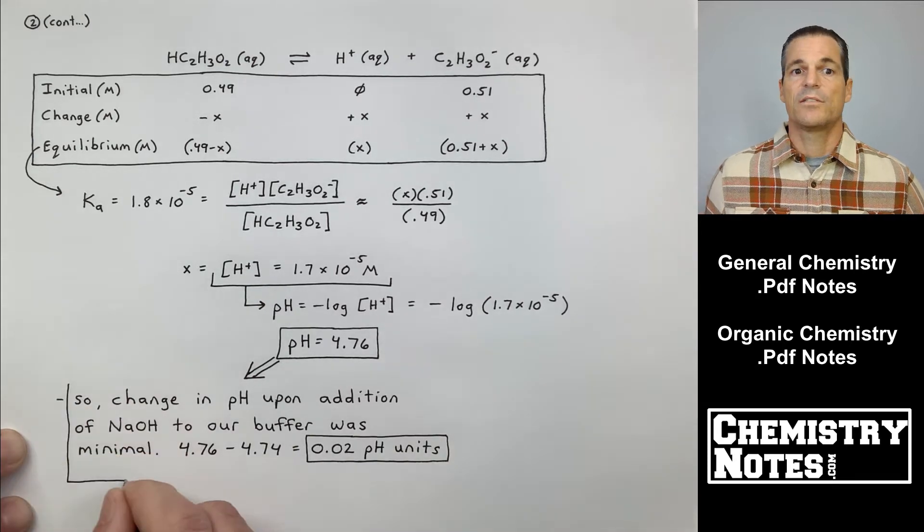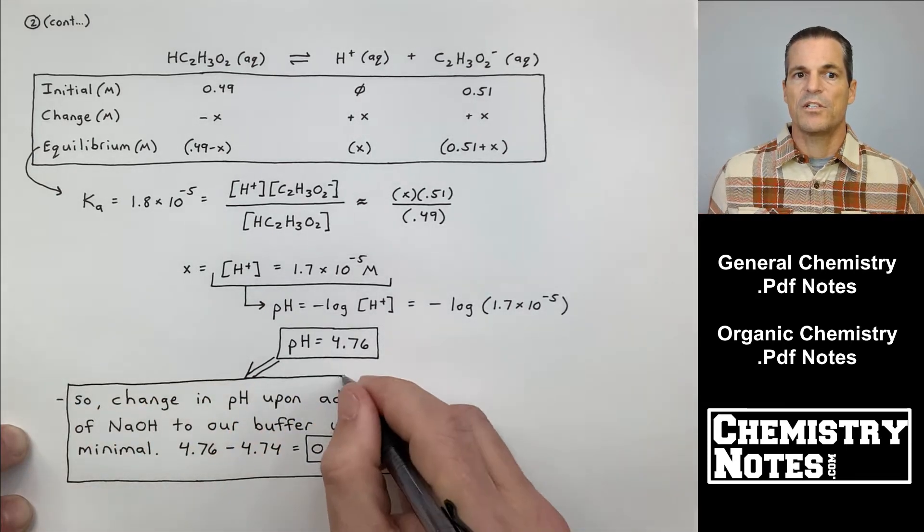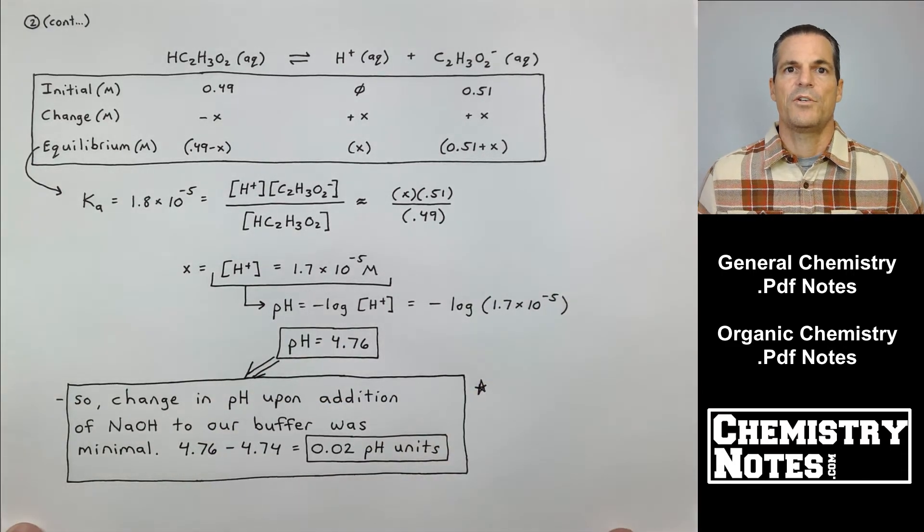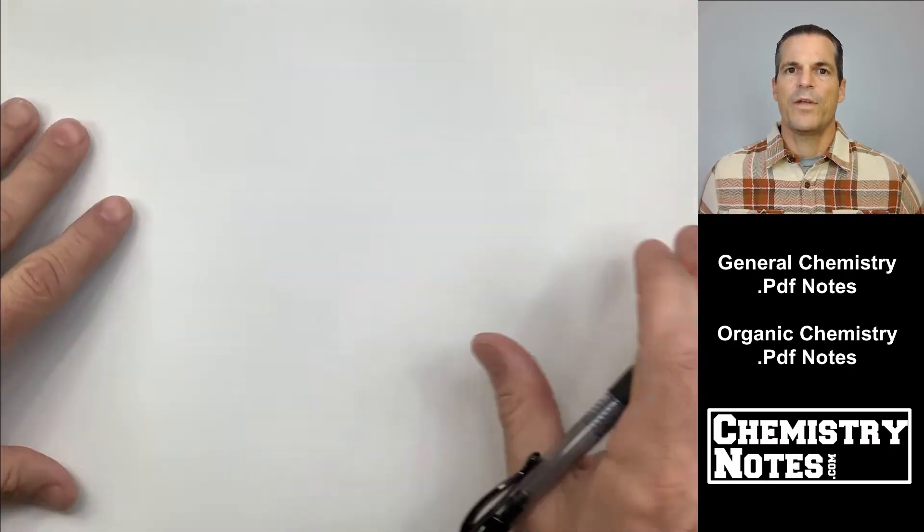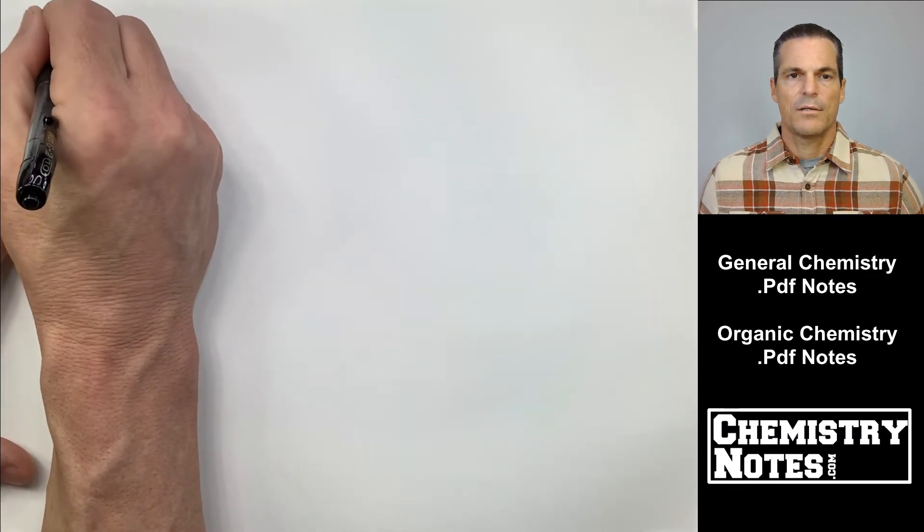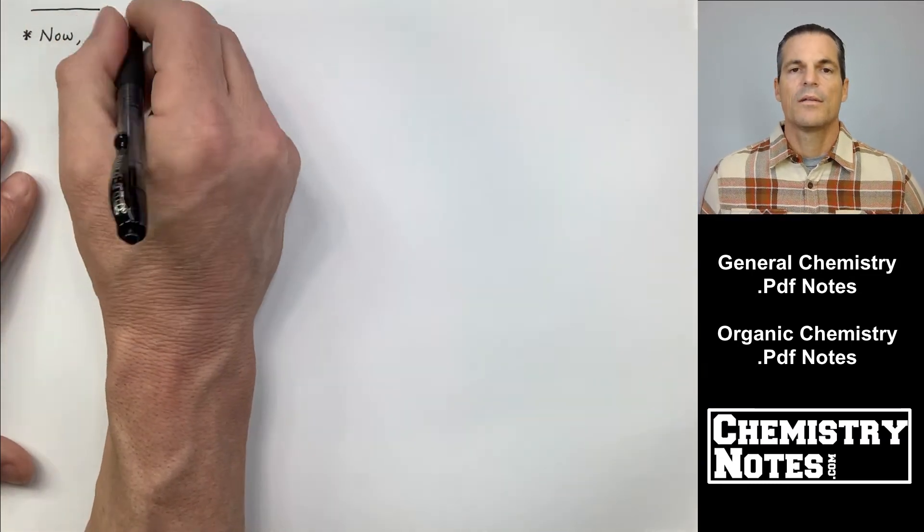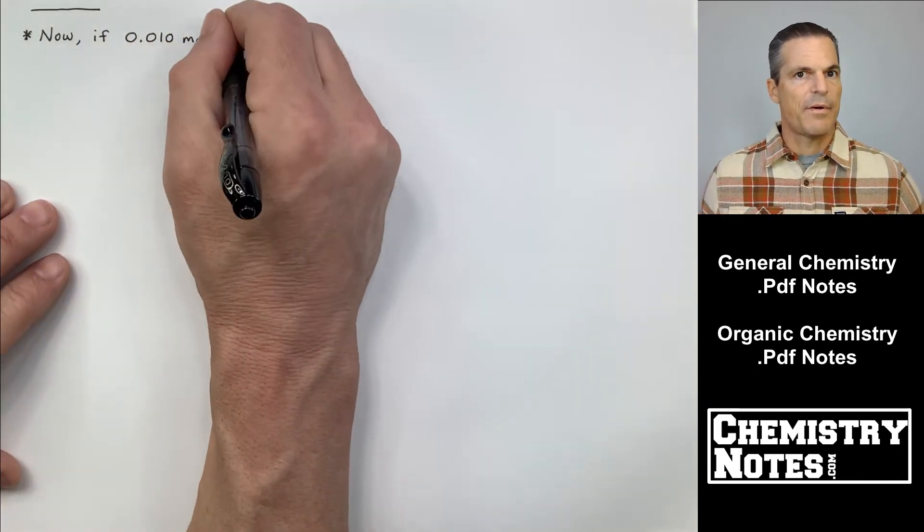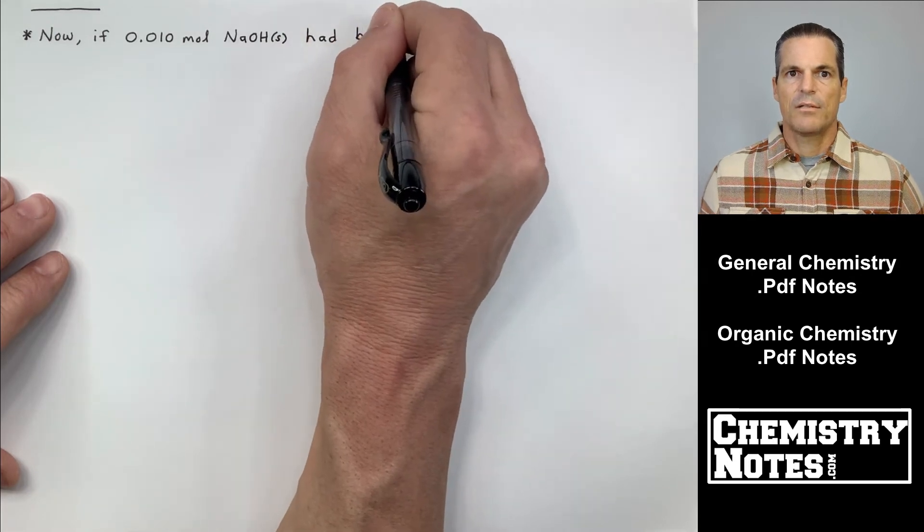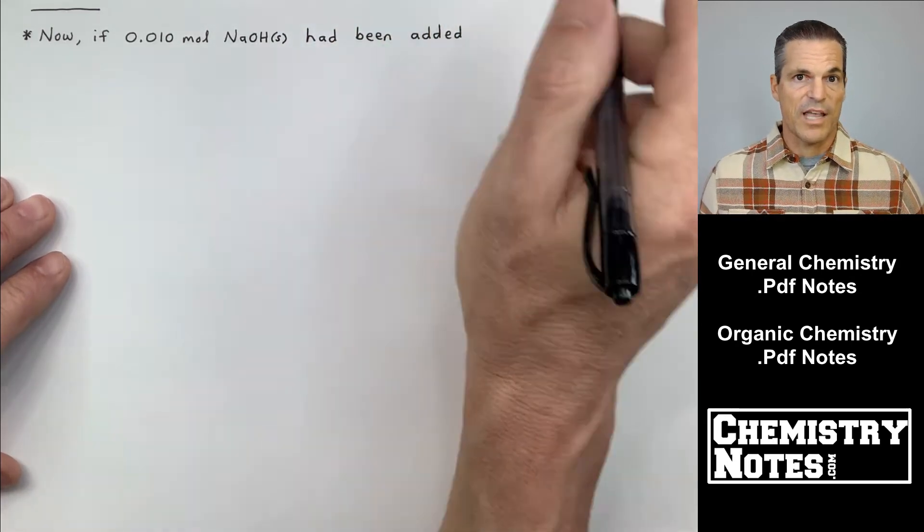What does it say here in the box? So, change in pH upon addition of NaOH to our buffer was minimal, 0.02 pH units. What would have happened if we added 0.01 moles of OH-, or NaOH, either one, to just pure water, which is not a buffer? Would the pH stay around 7? No, it would not. In other words, have a look at that right now.